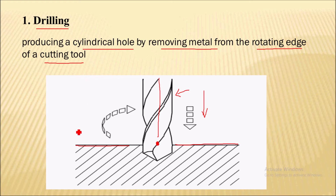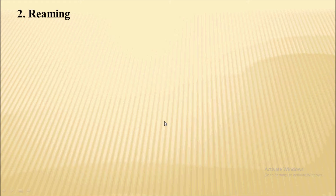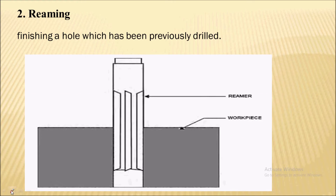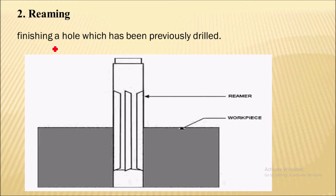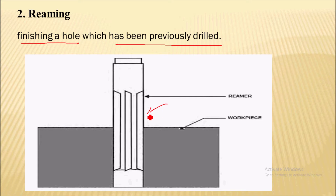Drilling is not an accurate hole-producing operation — the hole produced is rough in finish. The next operation is the reaming operation. This reaming operation is performed after the drilling operation. It is nothing but finishing a hole which has been previously drilled. For this, a reamer tool is used, which is a multiple cutting edge tool. This operation simply finishes a hole.